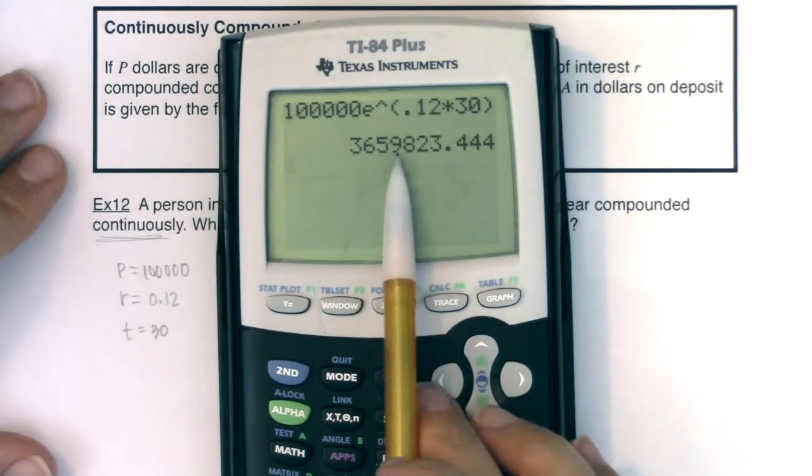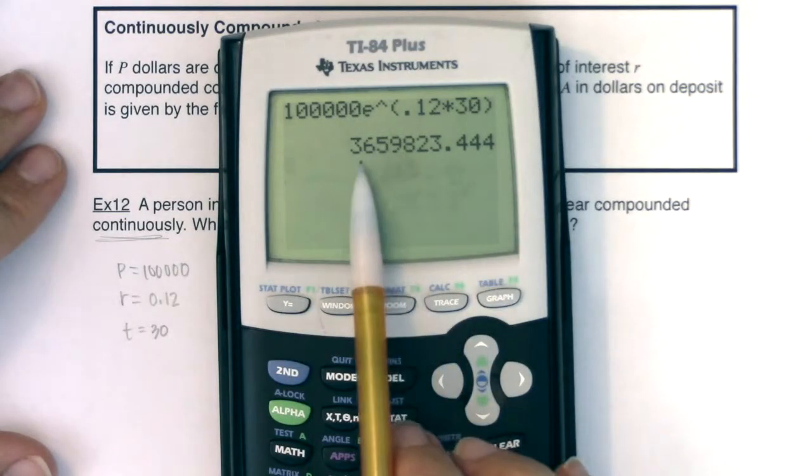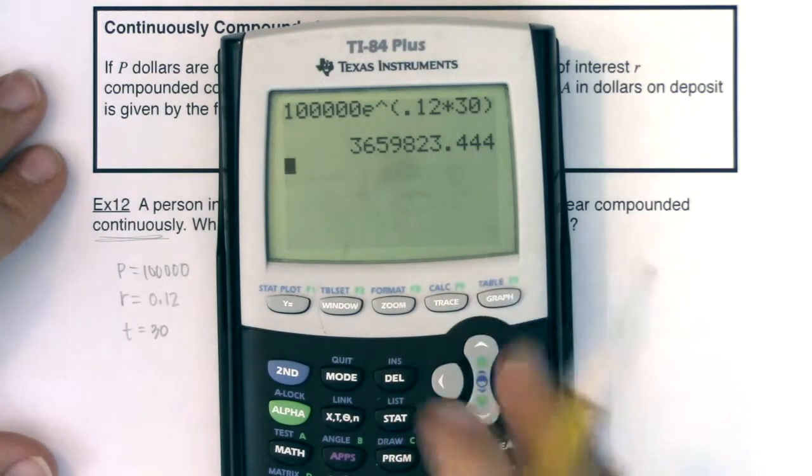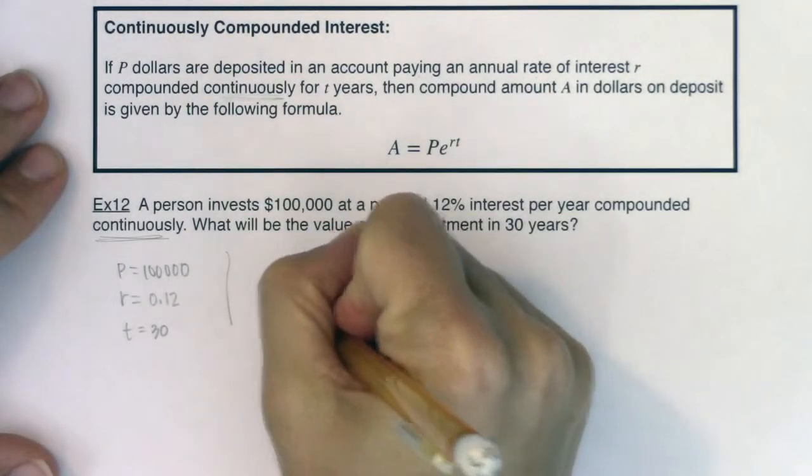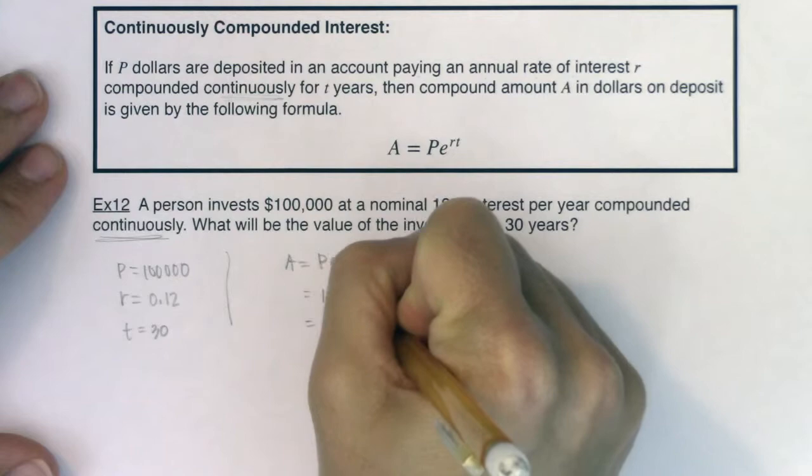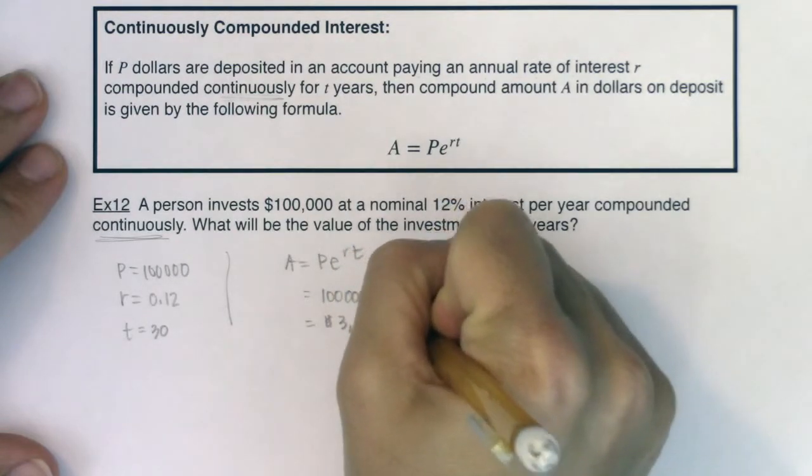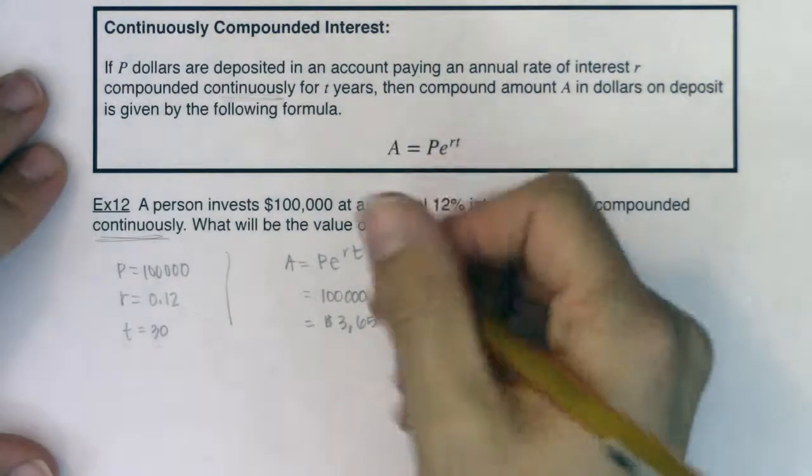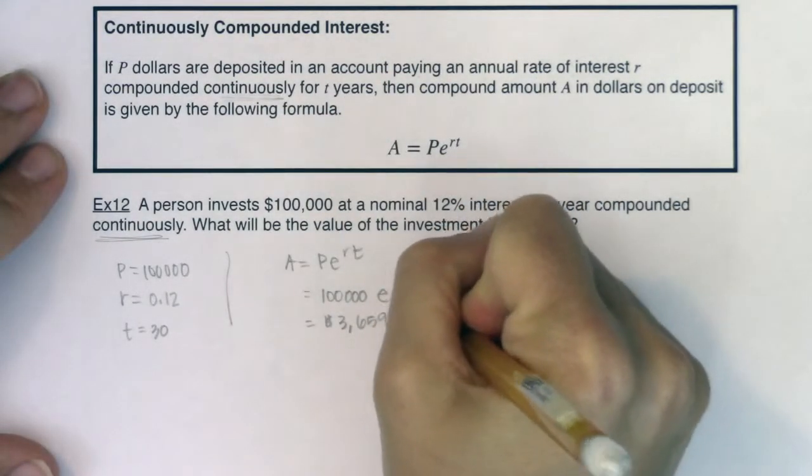When I hit enter, you can see we get a pretty large amount, just like we did in example 9. But this time I have $3,659,823.44. So let me go ahead and write that. We have $3,659,823.44.